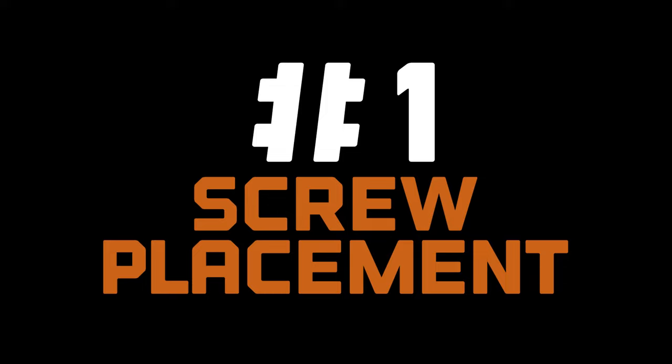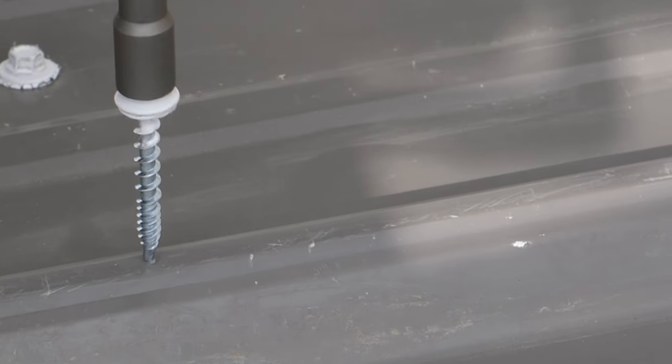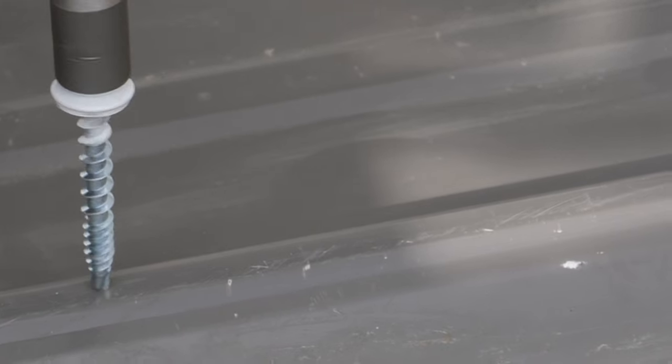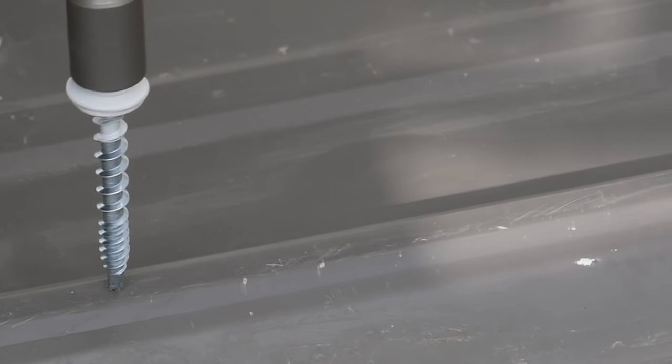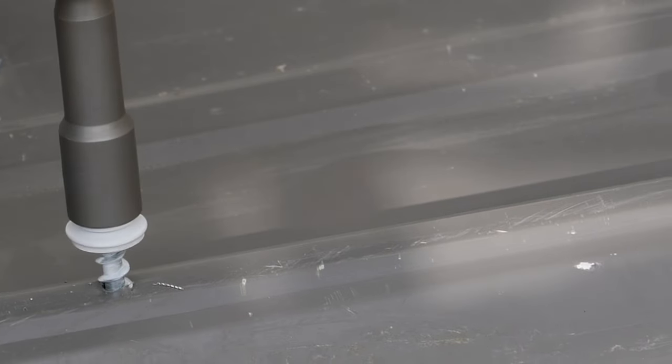Number one, screw placement. A common question when installing corrugated metal panels is where to place them. Depending on who you ask, the preferred placement will vary. Many professionals install on the ribs of the panels. This is favored because the screws avoid water drainage and debris.